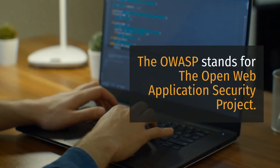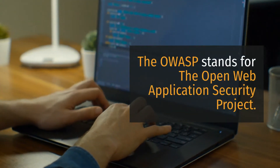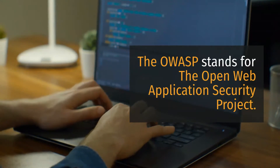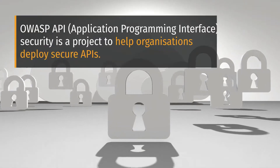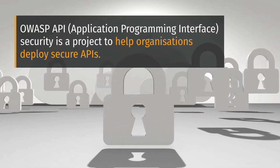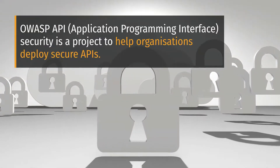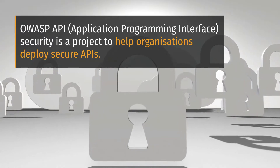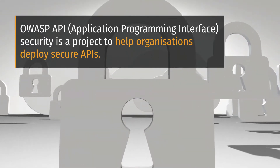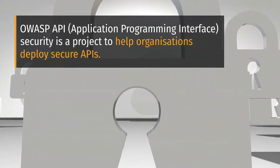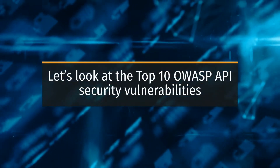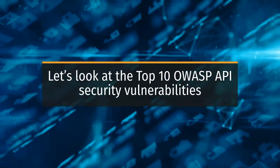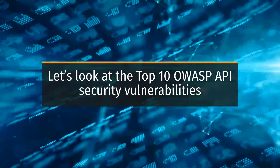OWASP stands for the Open Web Application Security Project. OWASP API — Application Programming Interface — Security is a project to help organizations deploy secure APIs. Let's look at the top 10 OWASP API security vulnerabilities.